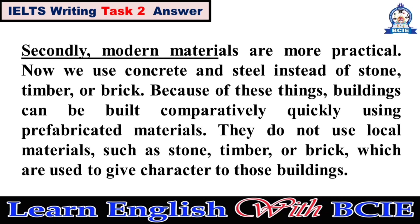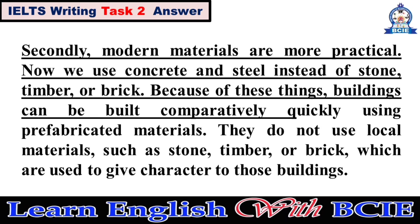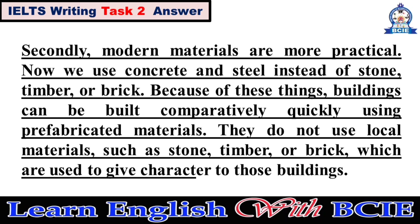Secondly, modern materials are more practical. Now we use concrete and steel instead of stone, timber, or brick. Because of these things, buildings can be built comparatively quickly using prefabricated materials. They do not use local materials such as stone, timber, or brick, which are used to give character to those buildings.